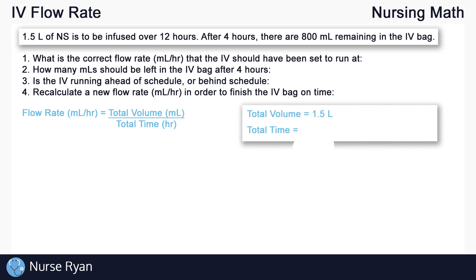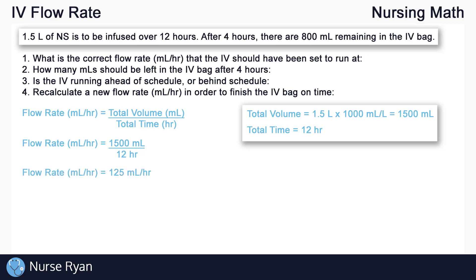Right now we have a volume of 1.5 liters and a time of 12 hours. We need to convert our volume from liters to milliliters to match our formula. Simply multiply 1.5 liters times 1,000 milliliters per liter, which gives us 1,500 milliliters. Now we can plug our values into our formula: flow rate in mils per hour is equal to 1,500 milliliters divided by 12 hours, for a final answer of 125 milliliters per hour. Always remember to add the unit at the end to get full marks. The IV should have been set at 125 milliliters per hour to infuse the total 1,500 milliliters in the allotted 12 hours.